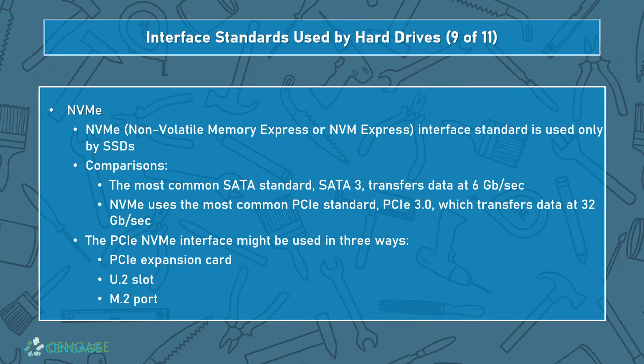NVMe — Non-Volatile Memory Express — is used only by SSDs at present. By comparison, the common SATA 3 standard runs at 6 gigabits per second, while the most common PCI Express 3.0 transfers at 32 gigabits per second — NVMe is able to use that speed, making it faster by a factor of five and a third. PCI Express NVMe might be used in three separate ways: a PCI Express expansion card, a U.2 slot, or an M.2 slot.